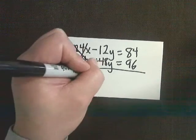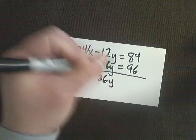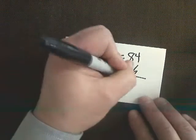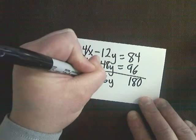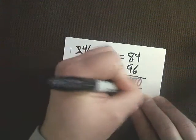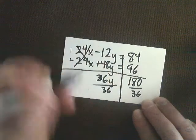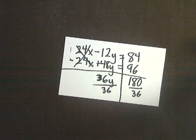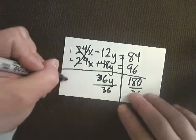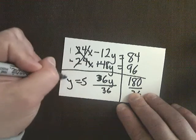Negative 12 plus 48 gives me 36y. And 84 plus 96 is 180. And I'm going to divide, since it's times y, I'm going to divide by 36 on both sides, which was the worst 36 ever written at one point. I'm proud of that. And shockingly, I get y is equal to 5, which, as we said before, is the correct answer.